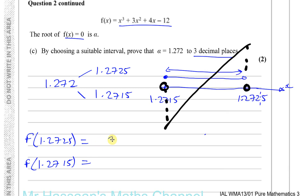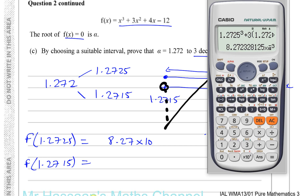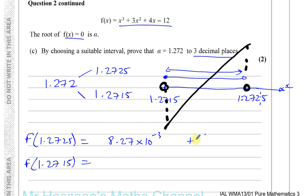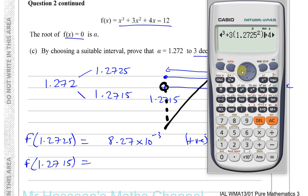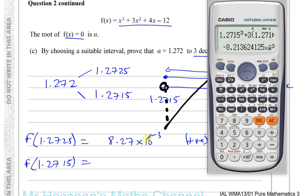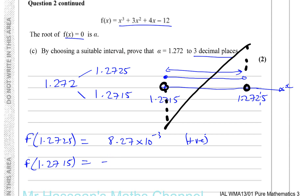Now we go back and change those values to 1.2715 and press equals. That gives minus 8.21 times 10 to the power of minus 3, which is negative. So at 1.2715 the line is below the x-axis, and at 1.2725 it's above the x-axis — there's a change of sign.